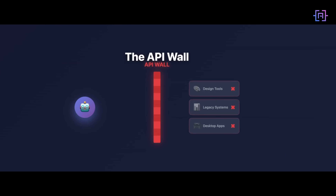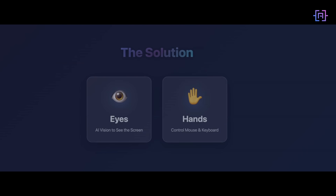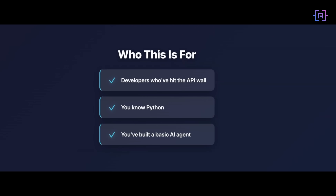The OpenAI Computer Use Agent model is the first vision model that's actually reliable for production. If you know Python and you have built a basic AI agent, you are ready. Let's give our AI eyes and hands.